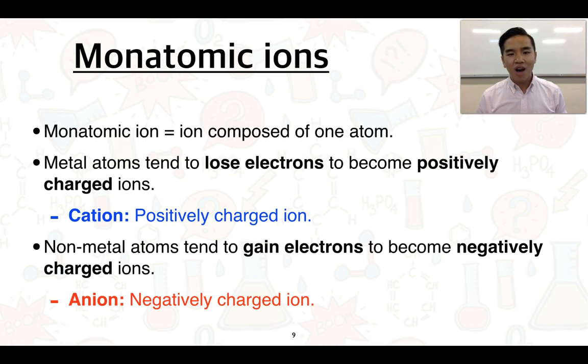The word monatomic ion means it's an ion composed of just one atom. An atom has lost or gained electrons to become either positively or negatively charged. In general, metal atoms tend to lose electrons, and because they lose electrons which are negatively charged, they become positively charged. We call a positively charged ion a cation. The way I like to think of this is that cation has a T, and a T looks very similar to a positive sign. Non-metal atoms, on the other hand, tend to gain electrons, and electrons being negatively charged results in a negatively charged ion. An anion is the name of a negatively charged ion. Anion stands for a negative ion. Hopefully this can help you distinguish between cations and anions.